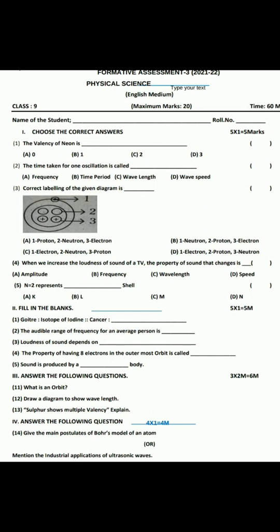First, choose the correct answers. Question one: the valency of neon is — option A: 0, option B: 1, option C: 2, option D: 3. The answer is option A, 0. The valency of neon is 0.